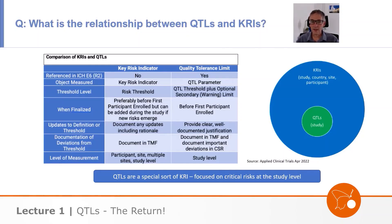A comparison of key risk indicators and quality tolerance limits — you can see the table here reproduced. As you look at that, hopefully you can see there are in fact a lot of similarities between KRIs and QTLs. One of the big differences is that QTLs are in E6R2, but KRIs are not. The QTLs are study level and focused on important areas, these critical quality factors.